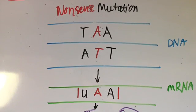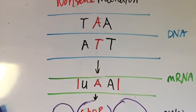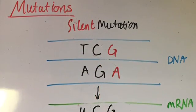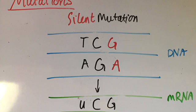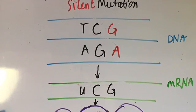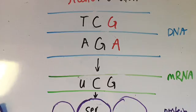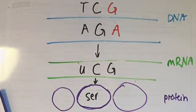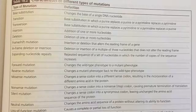There is a premature termination of translation and the mRNA will be shorter than usual. Then there is the silent mutation in which the new codon encodes the same amino acid and there is no change in amino acid sequence.